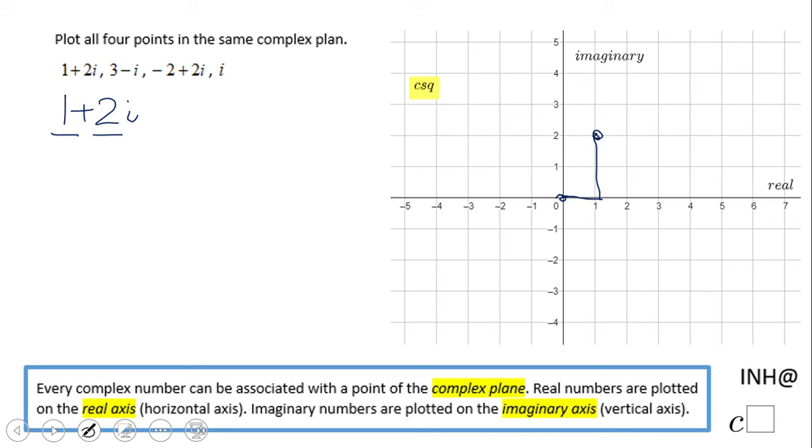What about the second one, 3 minus i? If you notice, we have a 3 and an invisible 1, right, i or 1i. We're going to go 3 right, 1 down, and this is 3 minus i.